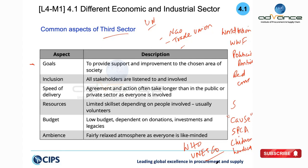A critical difference between third sector and other sectors: third sector organizations are dependent on donations, and the donors are generally not the beneficiaries. For example, you may donate to a child welfare organization but you will not benefit from that donation. In contrast, in public sector when you pay taxes you get benefits, and in private sector when you pay for something you get goods and services. In the third sector, when you make a donation, you are donating for a cause and will not personally receive the benefit.